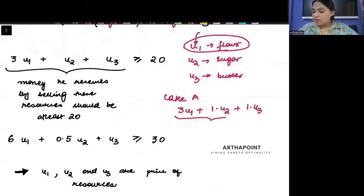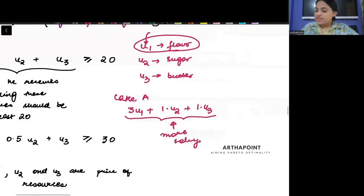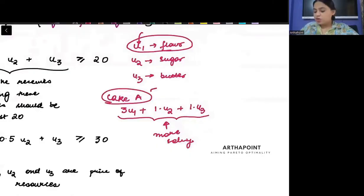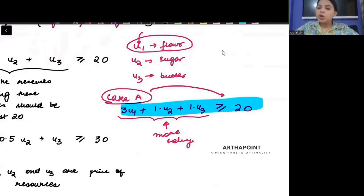This is the amount that I will make by selling these resources. And if I sell the cake itself, how much am I getting from one cake? 20. So this amount should be at least as much as I get by making this cake.